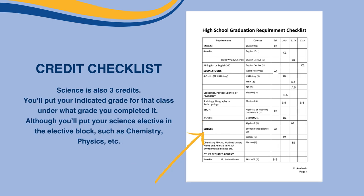For Science, you'll also need three credits. You'll put your anticipated grade for that class under whatever grade you completed it in. You'll put your Science elective in the elective blocks, such as Chemistry, Physics, and other such things.